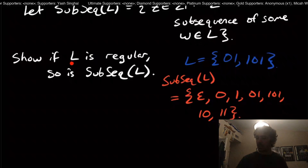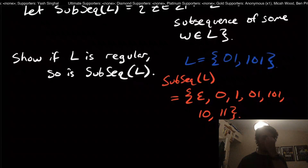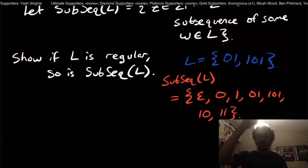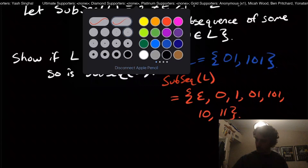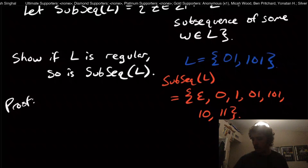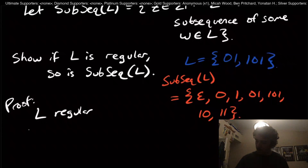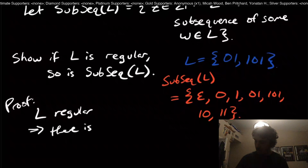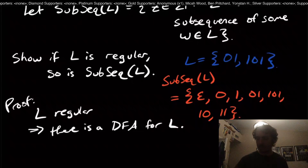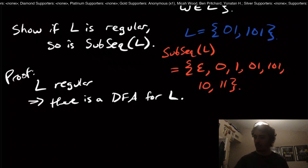What we're asked to show is: if we have a regular language L, then the subsequences language is also regular. Pause the video and try to think about it before continuing. So how do we actually solve this? All we know is that L is a regular language, which implies there exists a DFA for L.